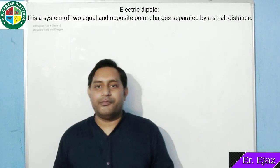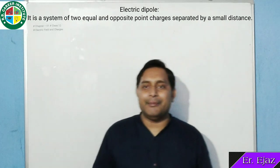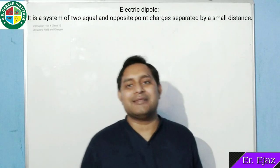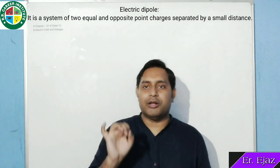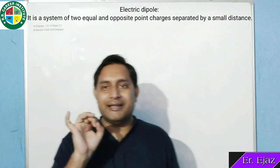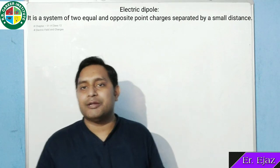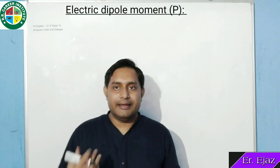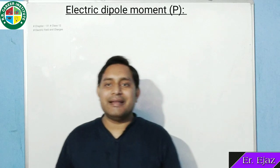Now we will discuss electric dipole and dipole moment. What is electric dipole? It is a system of two equal and opposite point charges separated by a very small distance. जब दो equal और opposite point charges बहुत ही small distance पर separated हों, तो उन्हें हम electric dipole बोलेंगे।